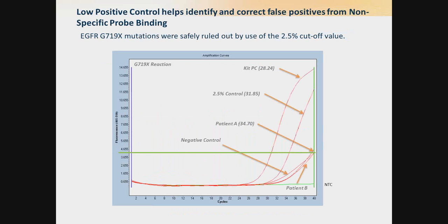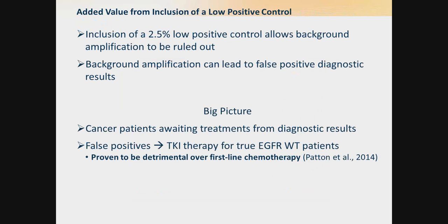Looking again at the results for G719S when we have included a low positive control, we see that the patient result is overlapping with the negative and we can safely rule this out as a negative. The value of including a low positive control allows us to rule out any background amplification and not report any false positive diagnostic results.